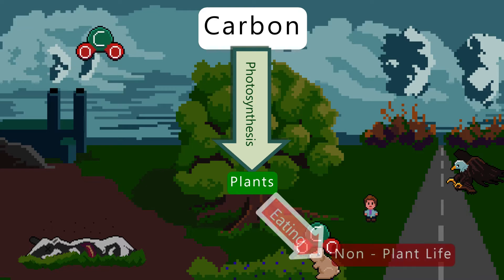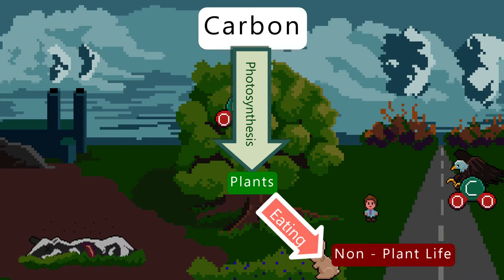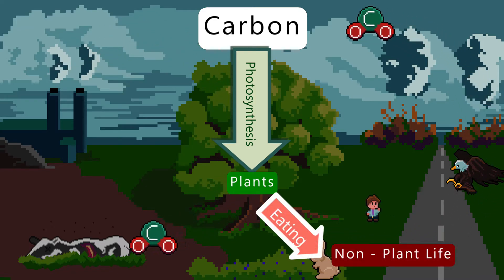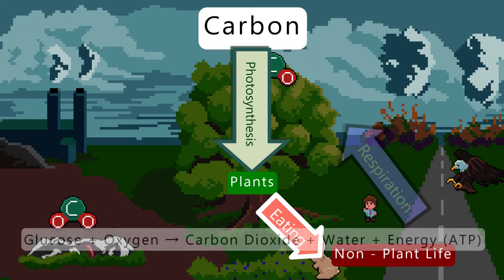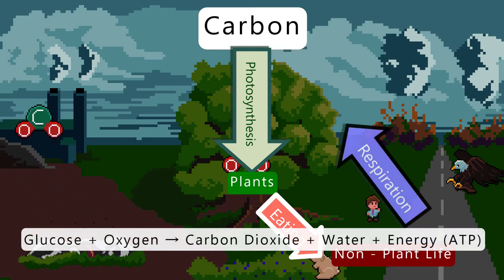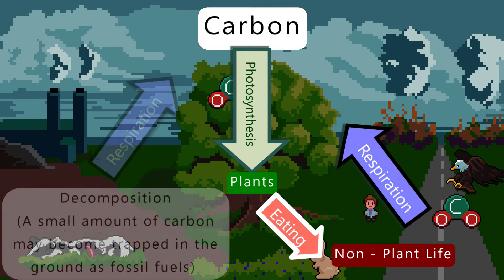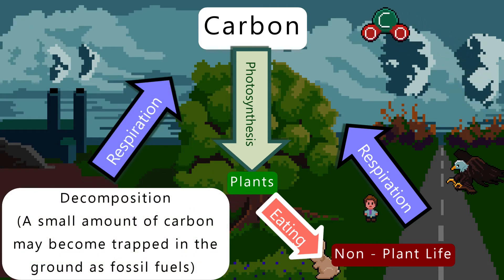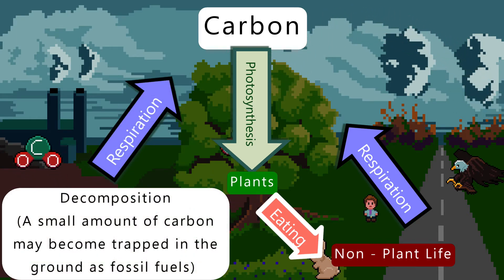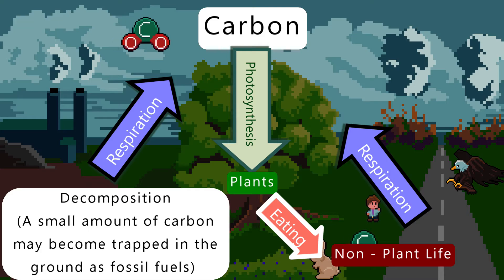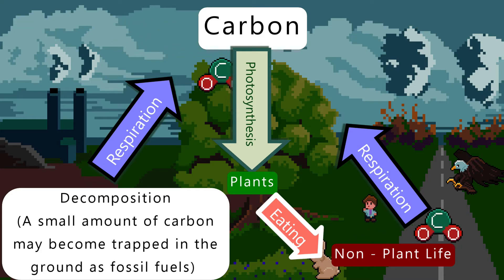Carbon is released back into the atmosphere by many routes. The main process being when living things respire, they release carbon dioxide as a waste product. Microorganisms that break down and decompose waste material and dead organisms also release carbon dioxide as they respire.